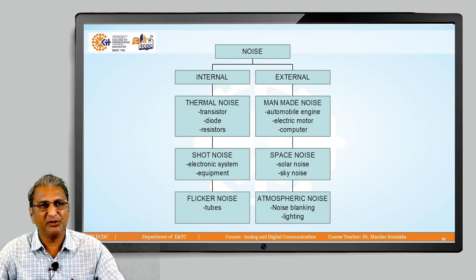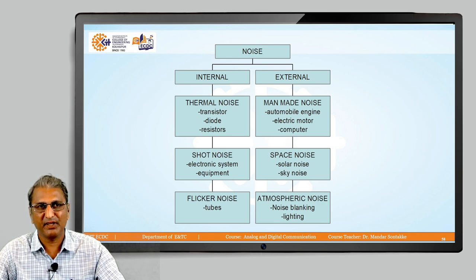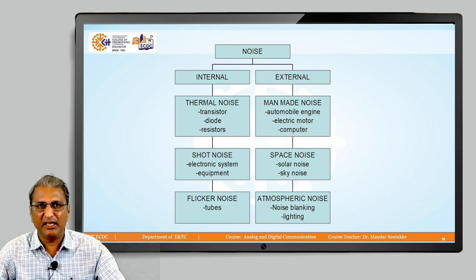Noise is classified into two types. One is called internal noise and the second is called external noise. The name itself tells you the meaning — internal means it is inside the circuitry, inside our system, and external means it is outside the system. Internal noise has different types: one is thermal noise, also called Johnson noise, named after the scientist who discovered it. Second is shot noise and third is flicker noise. External noise types are manmade noise, space noise, and atmospheric noise.